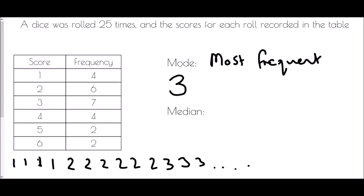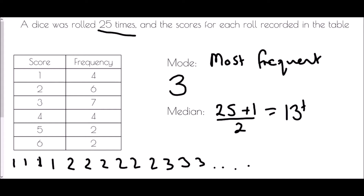There's a handy trick for frequency tables: take the total number of items — there were 25 rolls — add one and halve it. This tells us where the median is, not what it is. So 25 plus one is 26, divided by two is 13, which means the median is going to be the 13th value in our list.